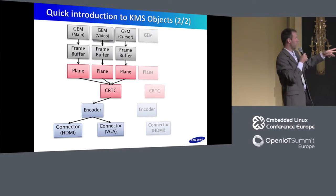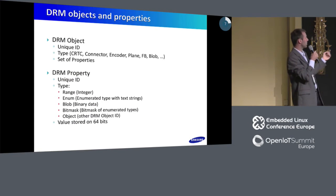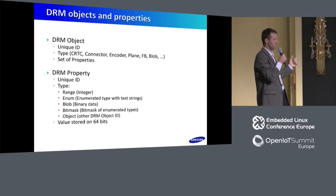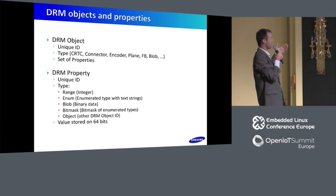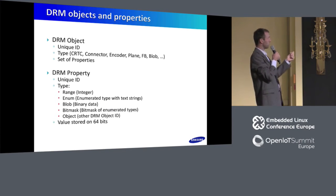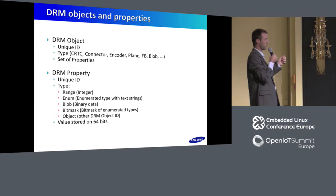The reason I talk about this is because all those entities are DRM objects, which are very important in the KMS API. The whole idea of the KMS API was to let user space first enumerate those objects and then configure them. Each DRM object has a unique ID and a type like CRTC, connector, or encoder. More object types were added later, like planes and blobs with binary data.